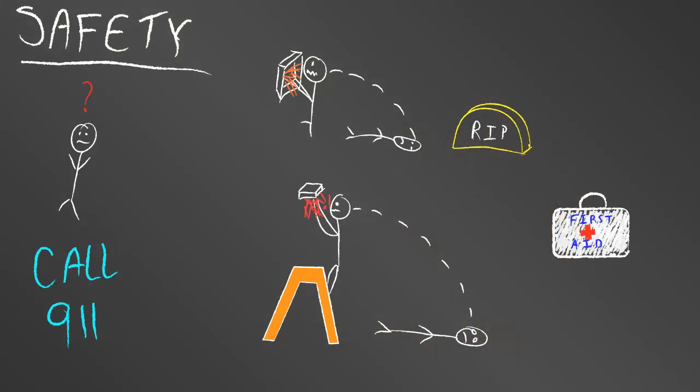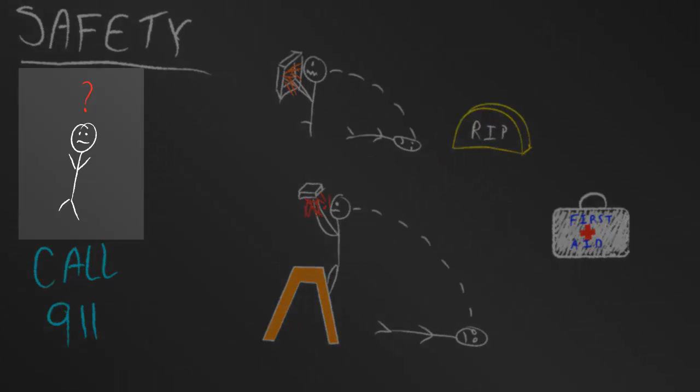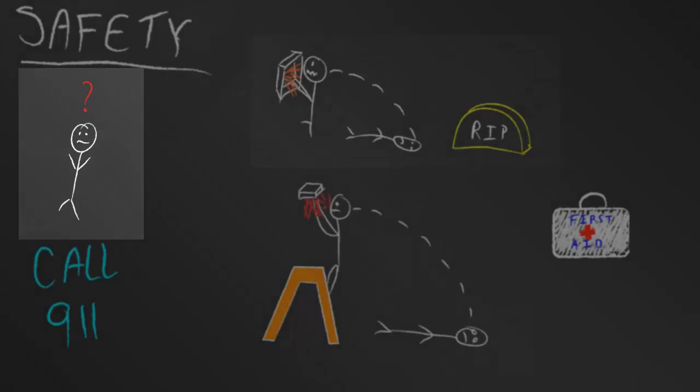Now, there may come a time when you come across somebody who has been hurt in the electrical field. They might be electrocuted. So what do you do if somebody's been electrocuted? Well, OSHA defines electrocution as death due to severe shock. So that means they are dead. You've got to call the morgue.